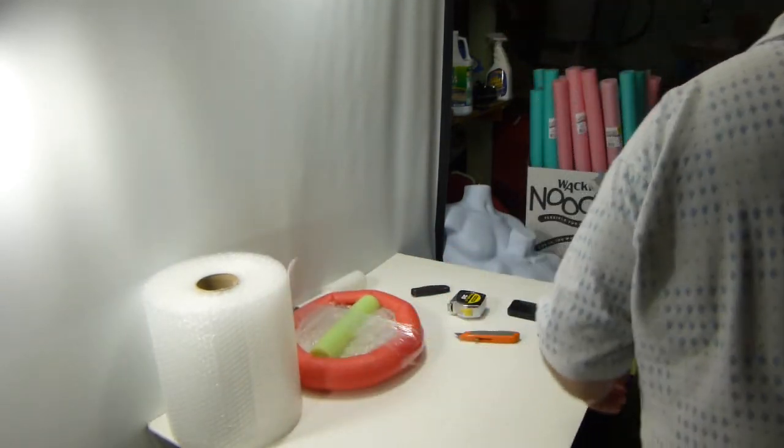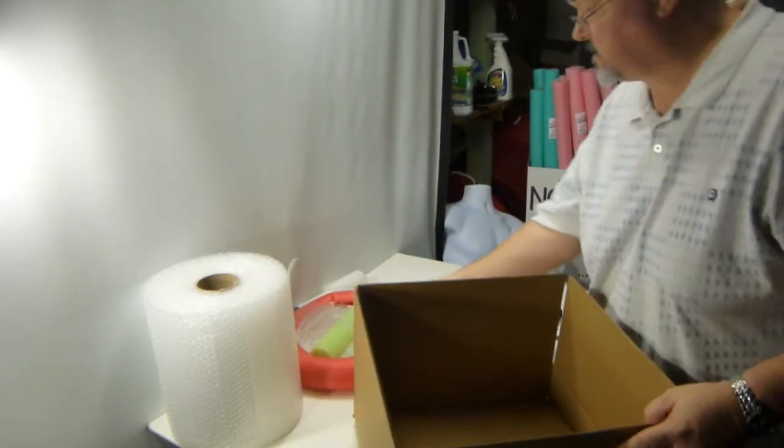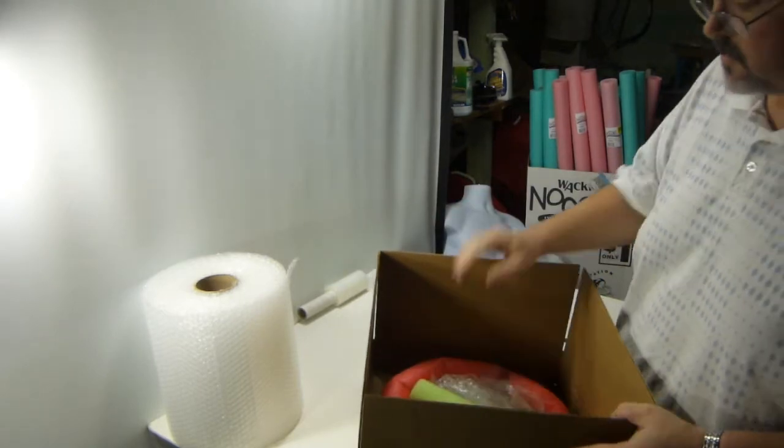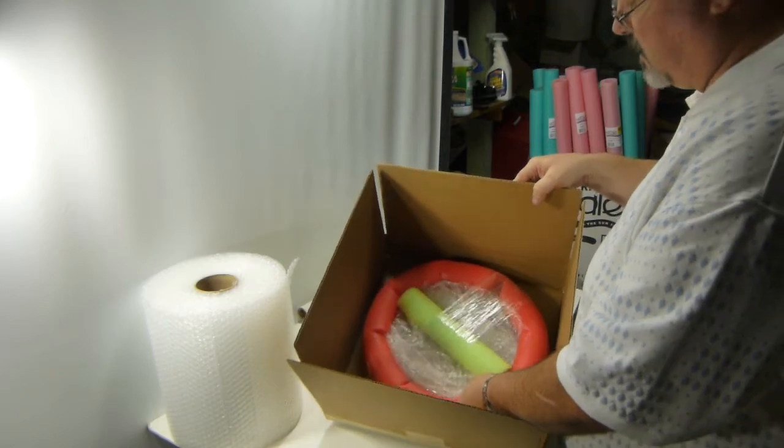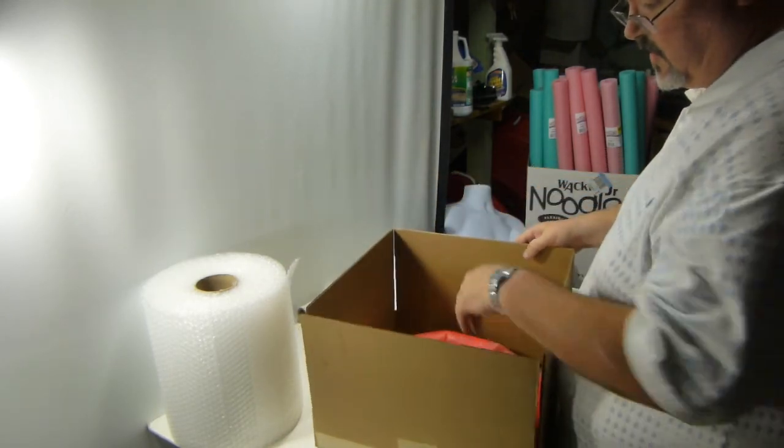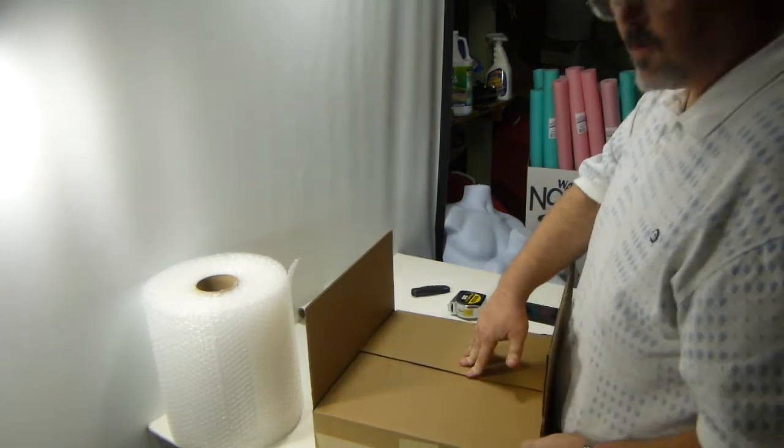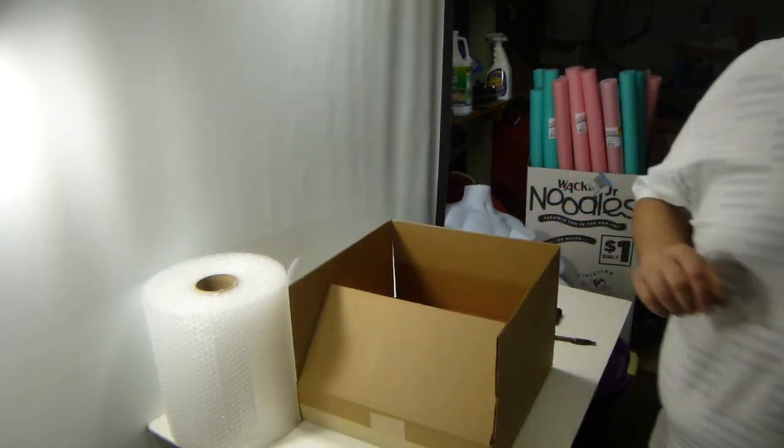And then that's pretty much good to go. I've got a 16 by 16 by 3 box. Drop it in here, use some void filler—either packing peanuts, newspaper, bubble wrap, whatever you'd like—so that it doesn't jiggle around. And it closes right up and seals nice and firm. So I hope that helps you guys.